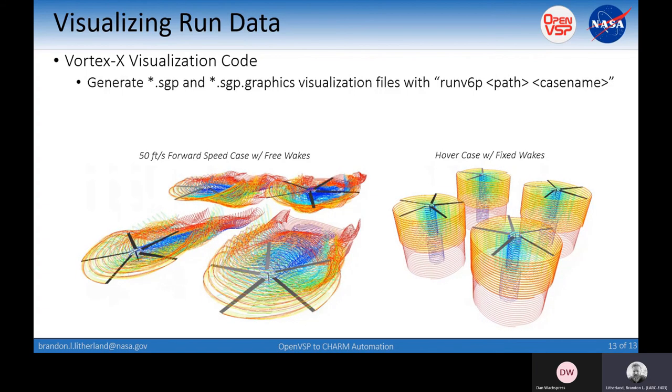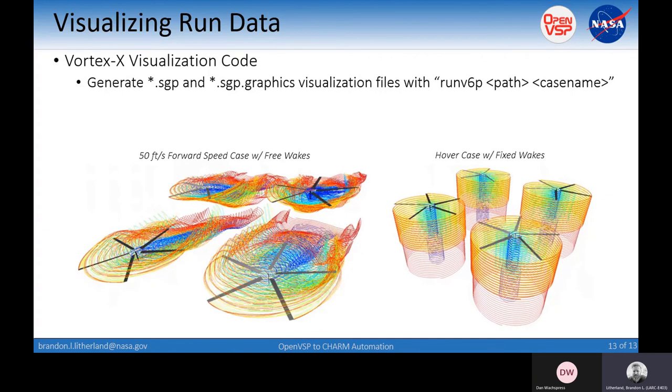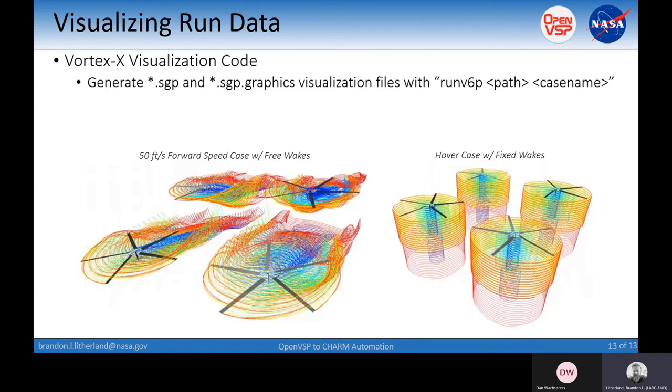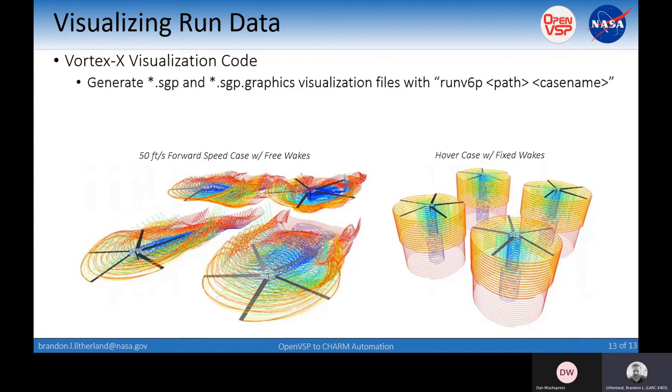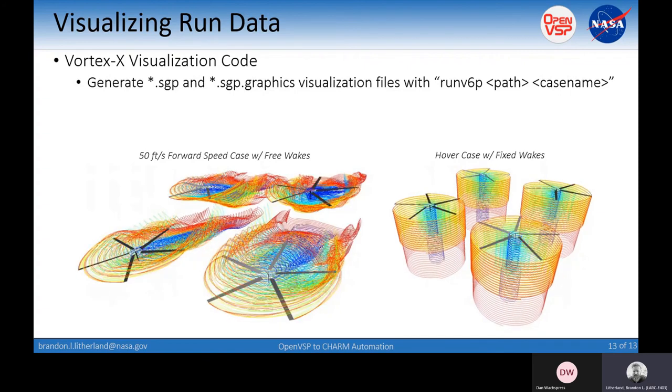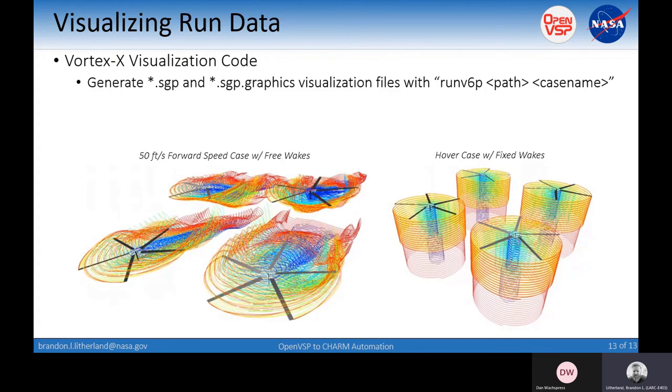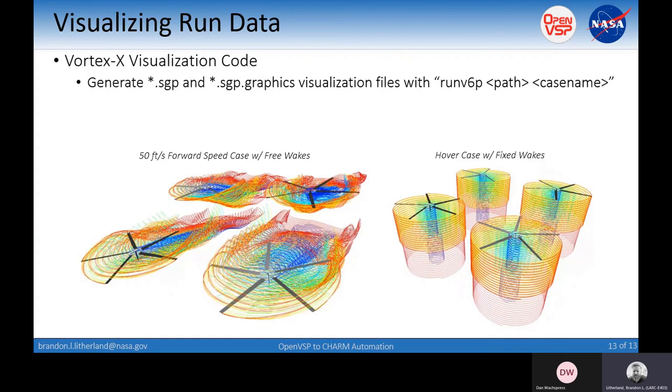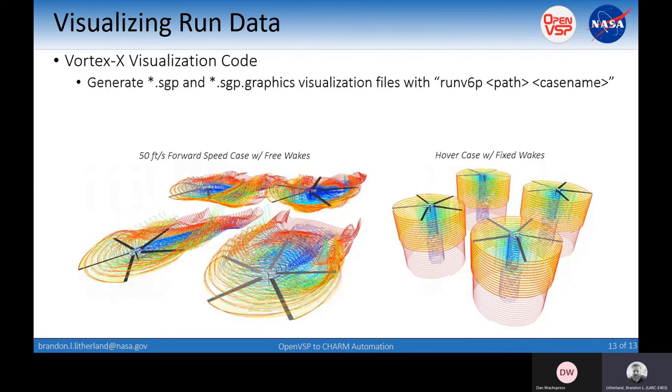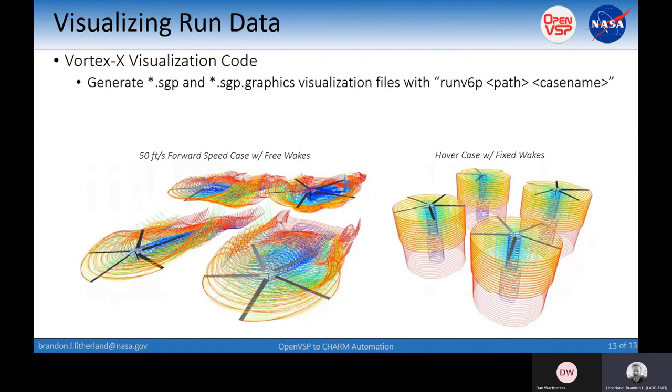In most cases, you'll take these from the cluster that you're running on and bring them back over to your computer so you can build up these visualizations. Just a couple of examples here, you can see that there's a quadrotor 50-foot-per-second forward speed case with the free wakes, kind of like Dan was illustrating. You can also do fixed wakes. There are several different ways that you can piece these things together. In each of these cases, this is run from Jupyter Notebooks through the API, and it executes everything.